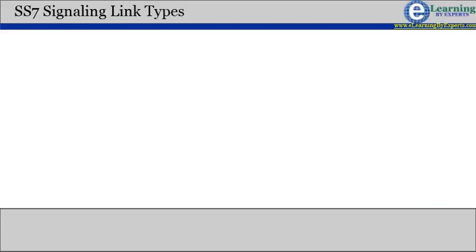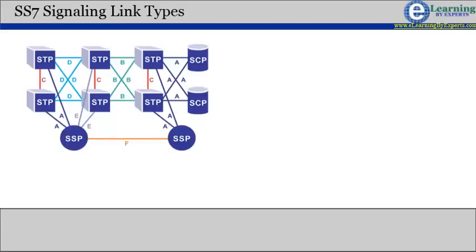Signaling links are logically organized by link type, A through F according to their use in the SS7 signaling network.